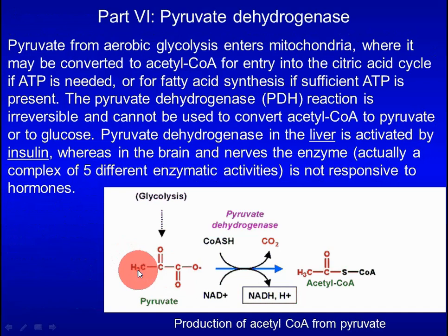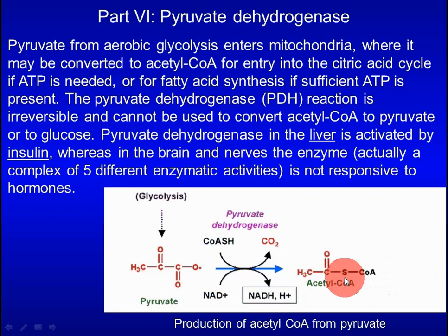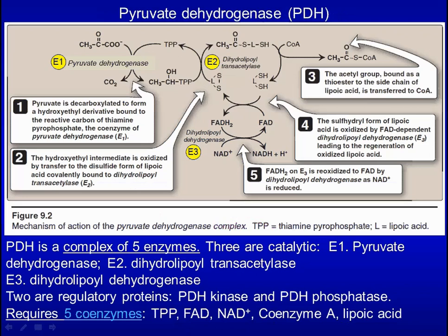Pyruvate is the final product of aerobic glycolysis. In the next step, pyruvate is decarboxylated and converted to acetyl-CoA. If sufficient energy is present, acetyl-CoA may be used to synthesize fatty acids. If ATP is needed, acetyl-CoA can enter the TCA cycle to generate energy. Decarboxylation of pyruvate is catalyzed by the pyruvate dehydrogenase complex, which consists of five enzymes — E1, E2, E3 — plus two regulatory proteins: PDH kinase and PDH phosphatase. It requires five coenzymes.